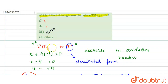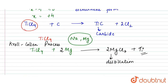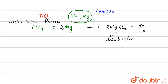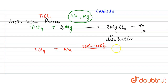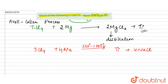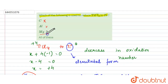So the correct answer is magnesium. Additionally, sodium can also reduce TiCl₄: TiCl₄ + 4Na → Ti + 4NaCl, and this reaction occurs at a temperature of 550 to 1000°C. Therefore, in this question, magnesium is the right answer.